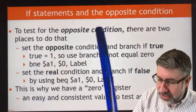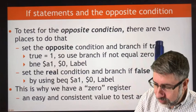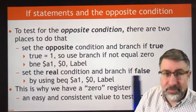There are two ways to test for the opposite condition: either set the opposite condition and branch if true, or set the real condition and branch if false.